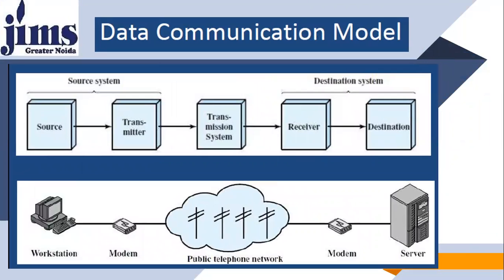Look at this figure. This is your source system, where originally data is generated. You have a source and a transmitter. The source is where the original data or message is generated. The transmitter is where we process this data — processing includes modulation, amplification, and all these things.